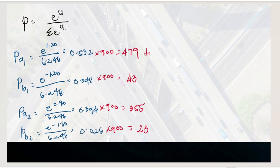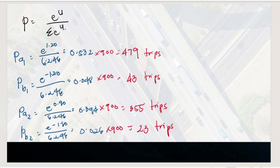Applying the Logit model with denominator 6.246: P(auto, SC1) = e^1.2 / 6.246 = 0.532; P(bus, SC1) = e^(−1.2) / 6.246 = 0.048; P(auto, SC2) = e^0.9 / 6.246 = 0.394; P(bus, SC2) = e^(−1.8) / 6.246 = 0.026. Multiplying by 900: auto to SC1 = 479 trips, bus to SC1 = 43 trips, auto to SC2 = 355 trips, bus to SC2 = 23 trips. Since bus travel time is greater than auto, there is a large difference between auto and bus trip counts.